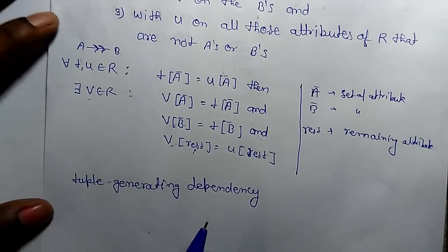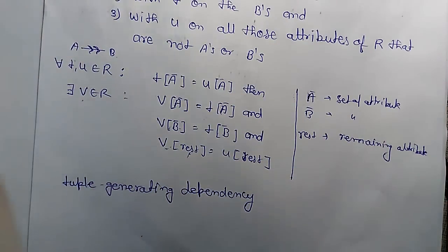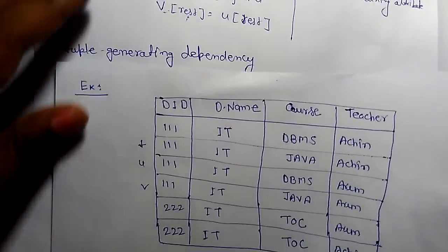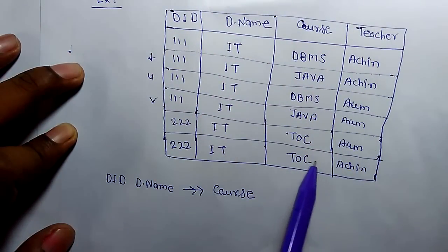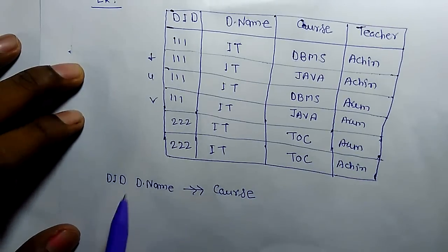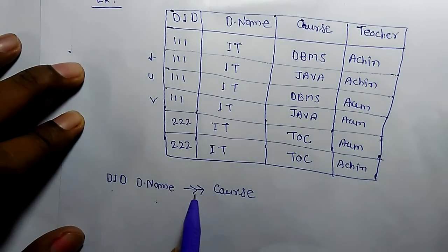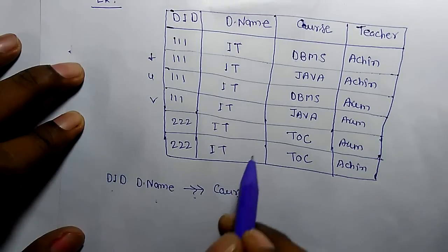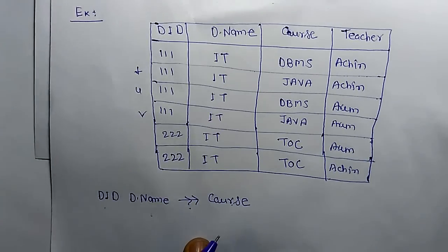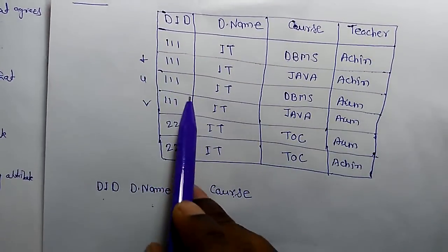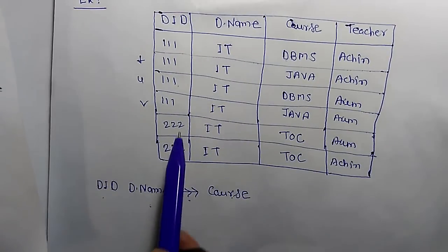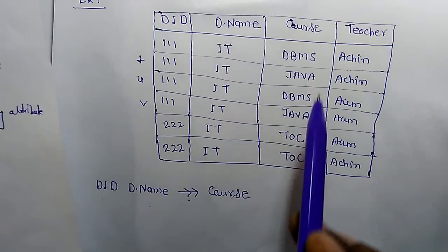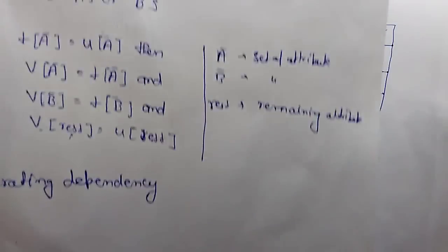Let's take an example with attributes: department ID, department name, course, and teacher — representing which teacher teaches which courses. We need to check whether department ID and department name combinedly multivalued-determine the courses. To verify, we take one row as tuple T and another as tuple U.